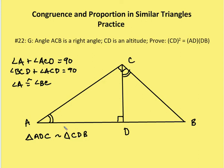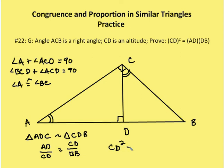Triangle ADC is similar to triangle CDB — angle A congruent to angle C, the right angle D, and angle B. Using the relationship between side lengths, I can rewrite this as a proportion: AD over CD equals CD over DB. By the means-extremes product theorem, CD squared equals AD times DB. So we've proven that CD squared equals AD times DB. I'll put up the two-column proof — if you want to read through and copy it down, go ahead.